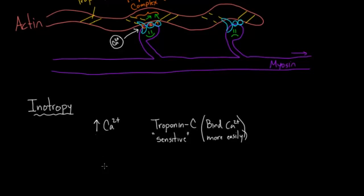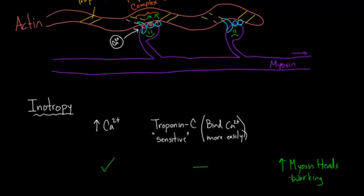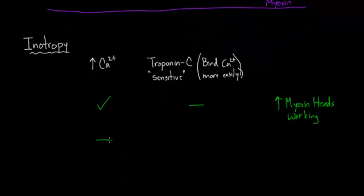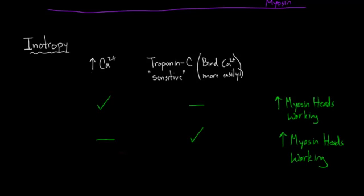So these are the two basic strategies. You could imagine increasing in one strategy, increasing the calcium but leaving the sensitivity of troponin C the same, really not changing how easily it will bind calcium. And the overall effect is more myosin heads are working. And you could flip it around. You could say, well, maybe you have the same amount of calcium. Maybe you don't actually increase the calcium, but you do make troponin C bind the calcium that is there more readily or more easily. Well in that situation you also get more myosin heads working. So in either scenario, in either strategy, you're going to get more myosin heads working. And so these are the two basic strategies for inotropy.